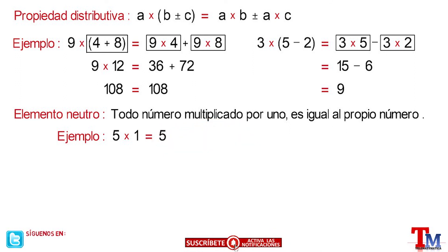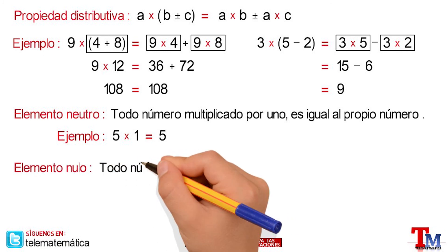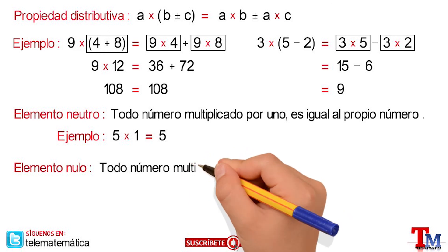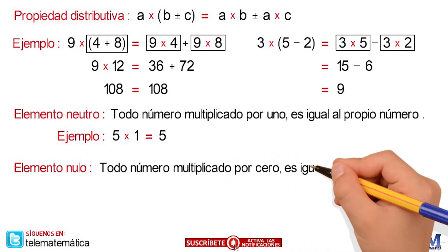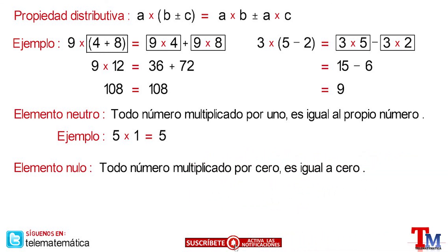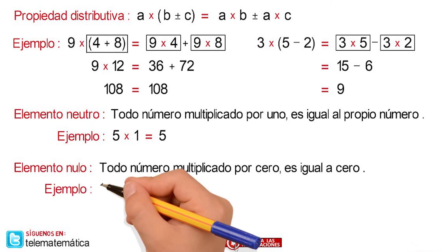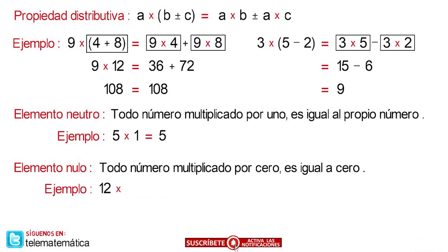Property number 5 is the null element, which is defined as: every number multiplied by 0 is equal to 0. For example, 12 multiplied by 0 is equal to 0.